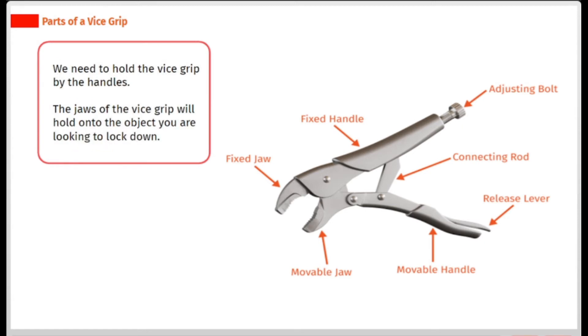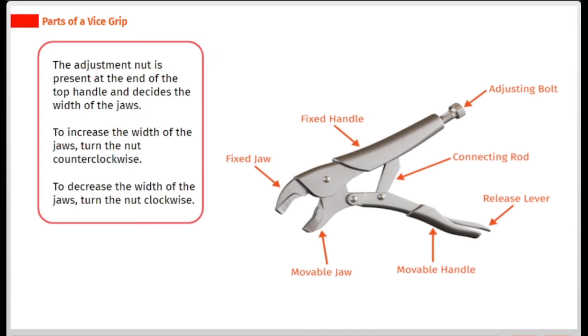We need to hold the vice grip by the handles. The jaws of the vice grip will hold onto the object you are looking to lock down. The adjustment nut is present at the end of the top handle and decides the width of the jaws.